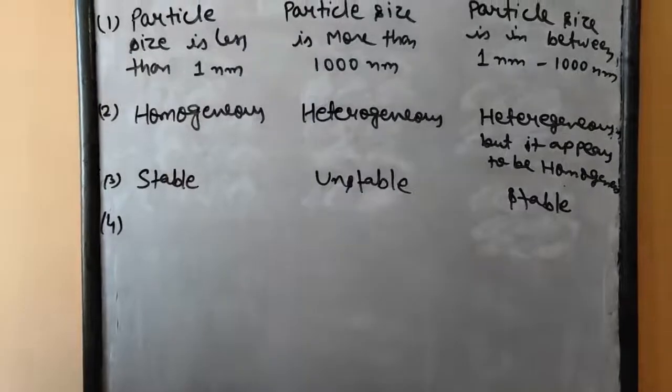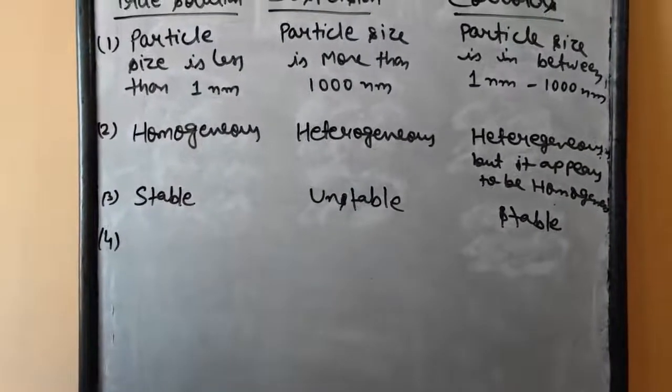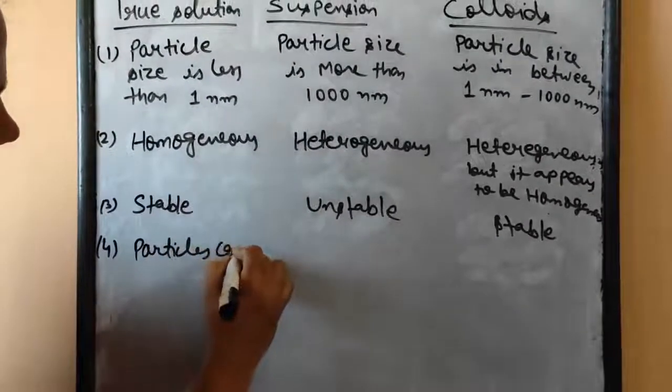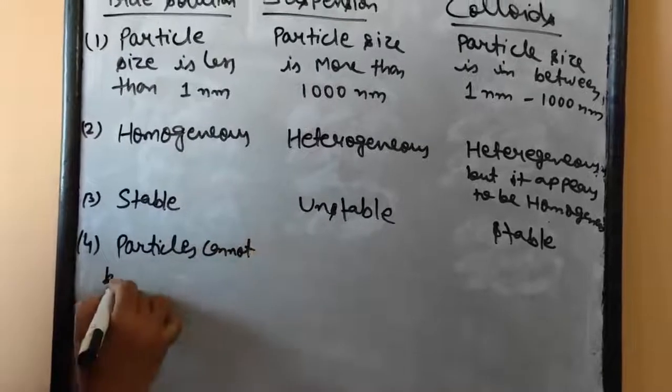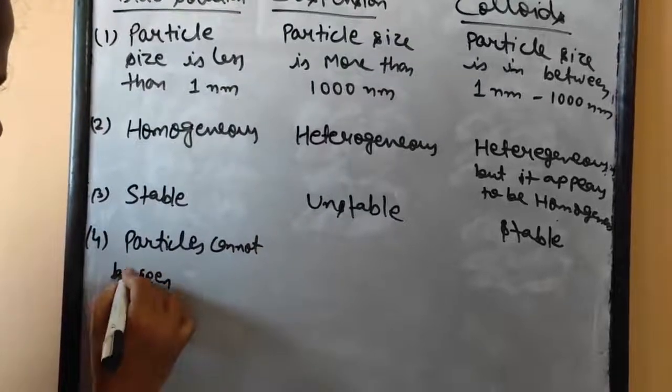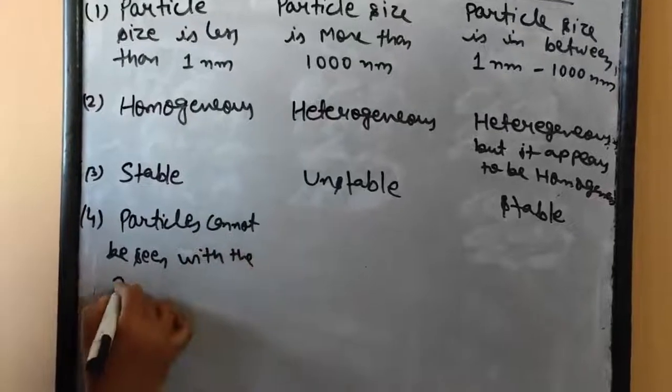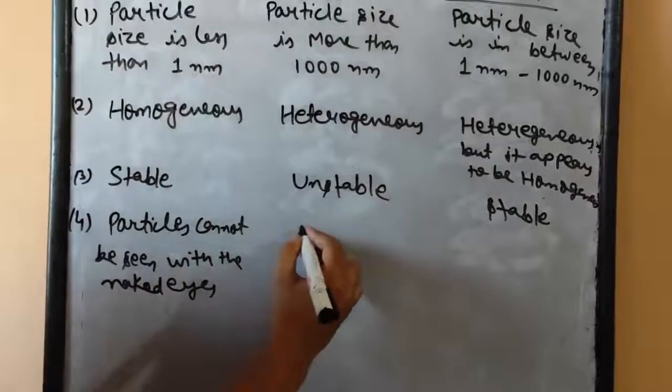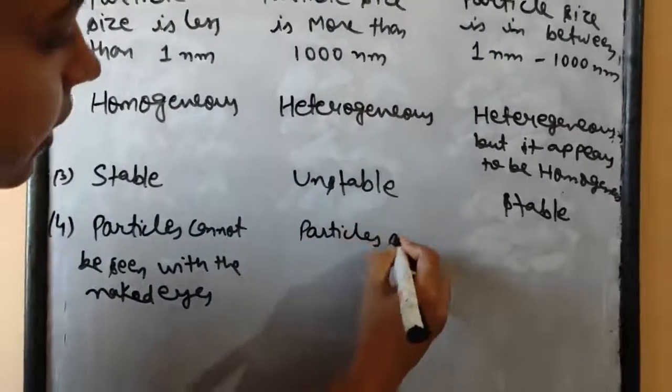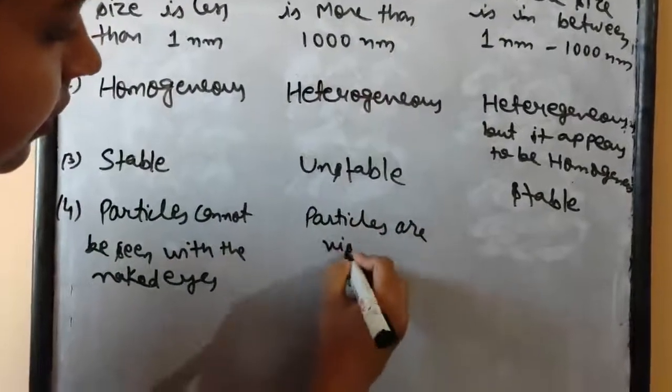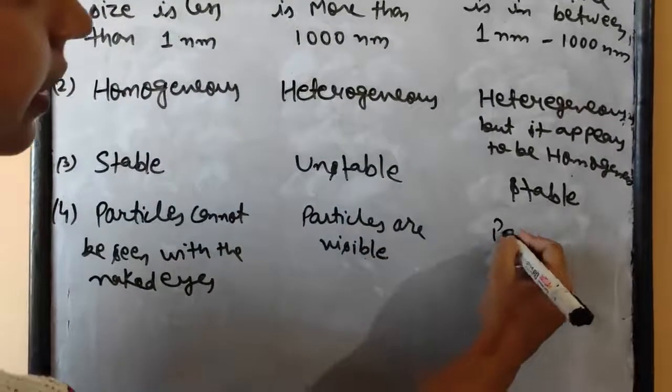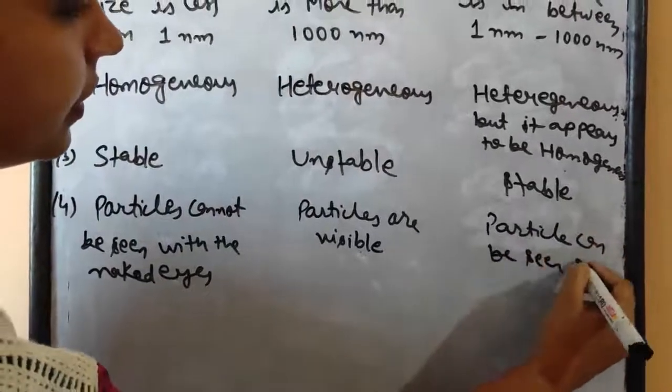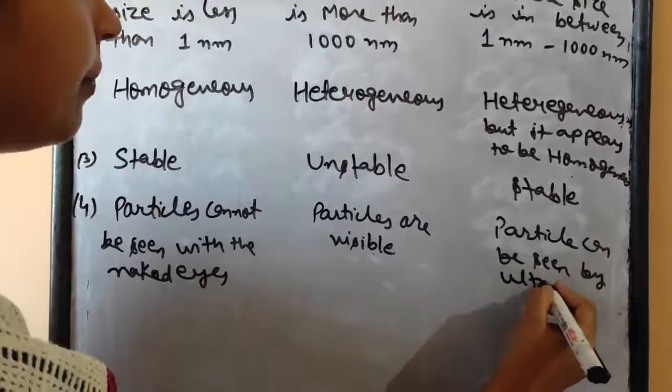Now the next one is particles. The particles cannot be seen with the naked eyes. Here particles are visible. And here particles can be seen by ultra microscope.